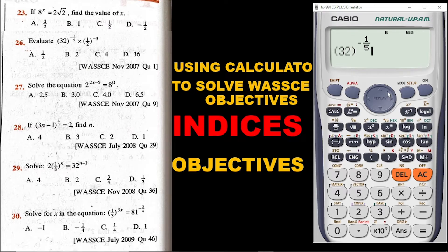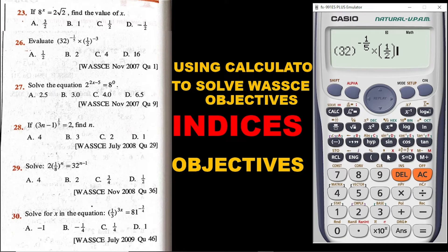Click it again and now the cursor is down, so we can continue the expression. Multiply it by — open bracket. The number inside is a fraction, so you hit the fraction button. We have 1 over 2: so 1 up there, go down, then click 2. The cursor is down, so let's move it up because we are done with the fraction. Hit the right arrow key, then close your bracket. The exponent here is negative 3, so go for the exponent symbol and then negative 3.